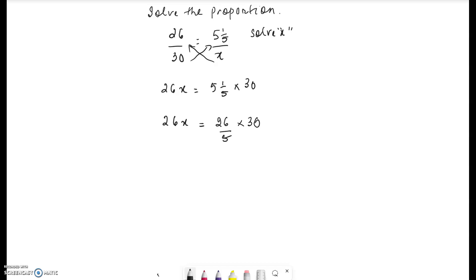So 26 is equal to 26 times 30 divided by 5. Now that's 26x. Now we need to divide both sides of this equation by 26 in order to solve for x.